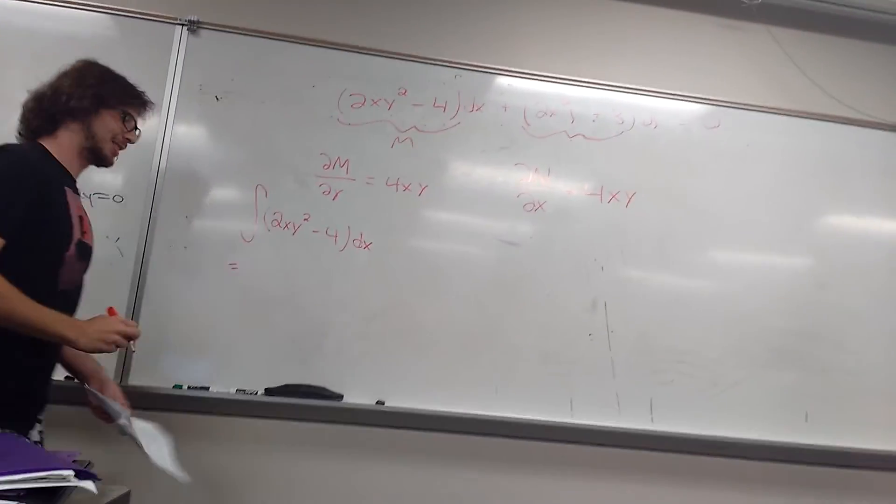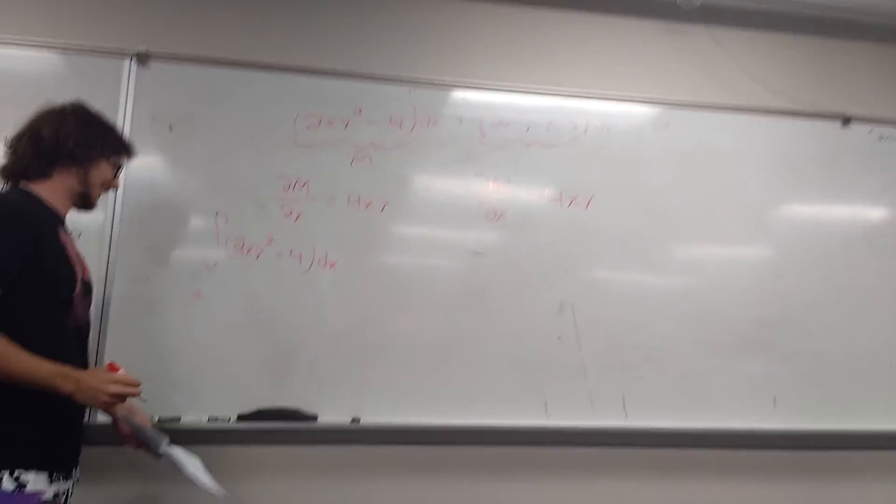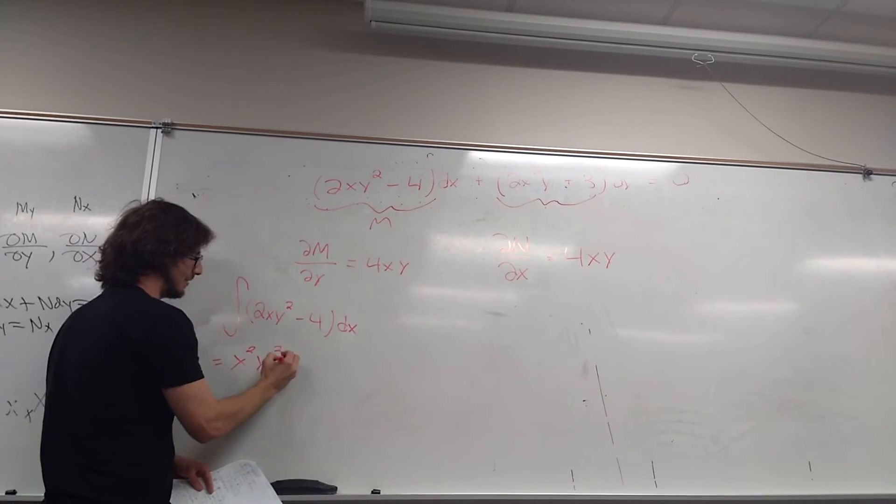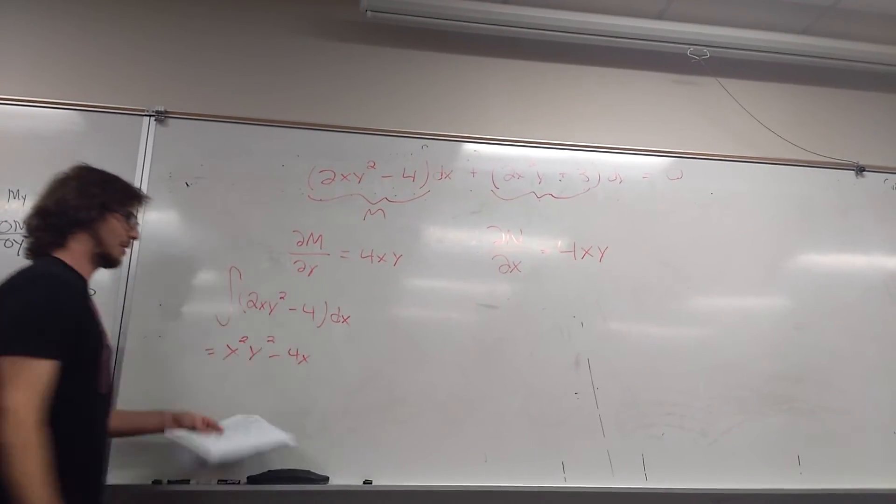Looks good. Because you're recording me, I'm nervous. I know, now you know how I feel. So you get x squared y squared minus 4x, integrated with respect to x.